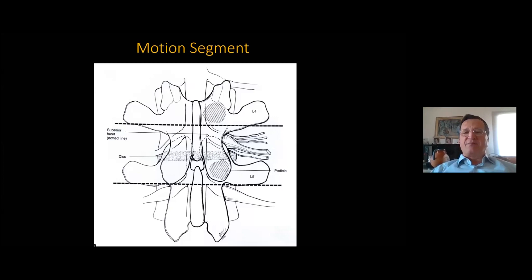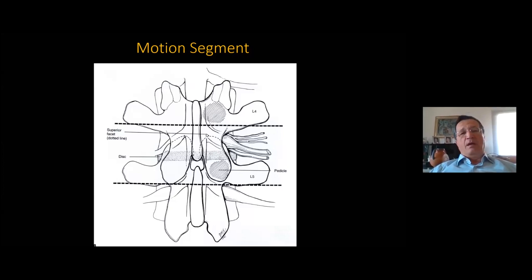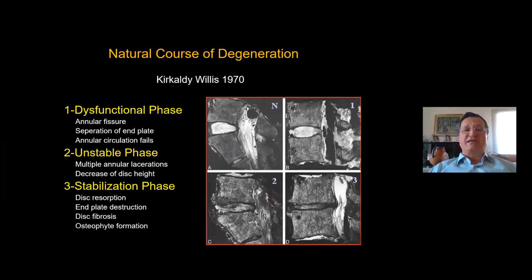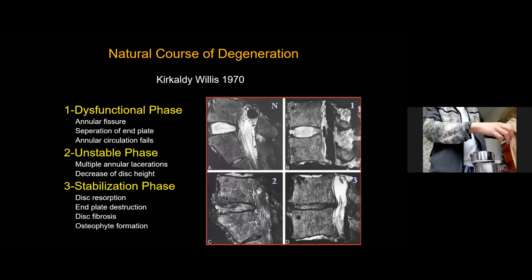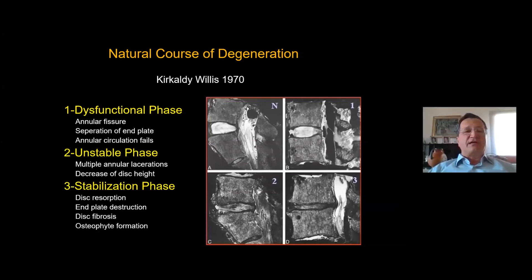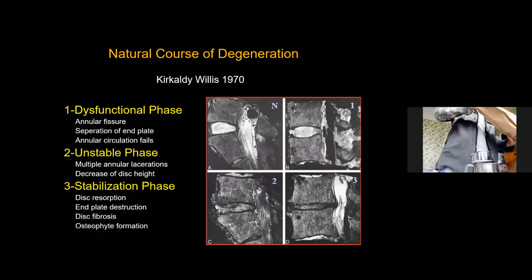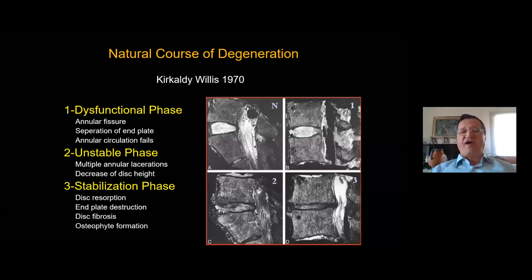The concept of the motion segment helps us understand the pathophysiology happening with stenosis. This is one disc level adjacent to end plates and facet joints at the back. The degeneration phases of Kirkcaldy and Willis are very informative. First, some changes inside the disc happen — this is the dysfunctional phase. Then multiple annular lacerations occur in an unstable phase. Then a stabilization phase comes with disc resorption and new osteophyte formations, as the body itself tries to fuse that level.